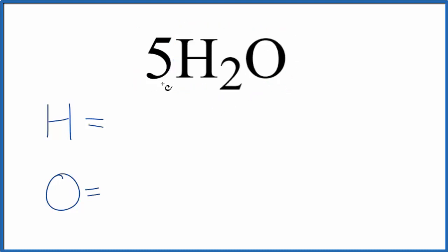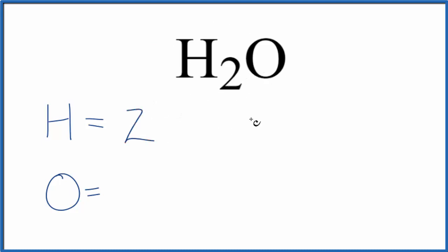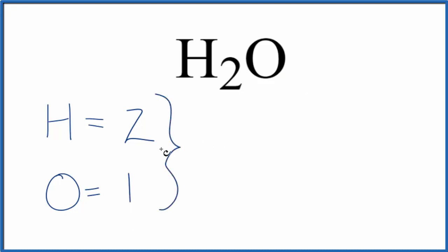Let's start by finding the number of atoms in H2O. There's a 1 here — it's not written — but this is one water molecule. We have two hydrogens, and then a 1 for our oxygen, so one oxygen. The total number of atoms for H2O is 2 plus 1: three total atoms.